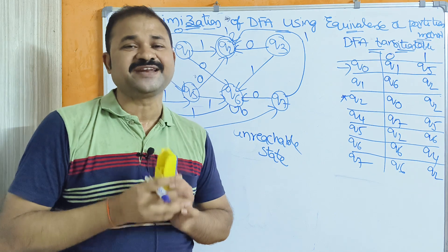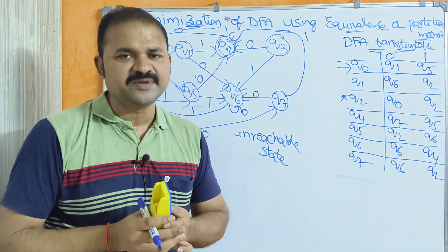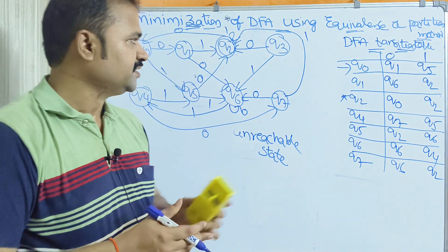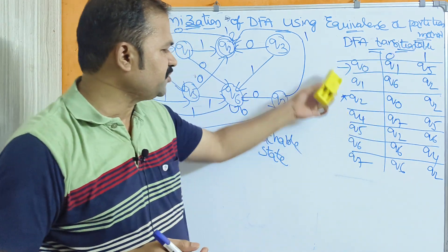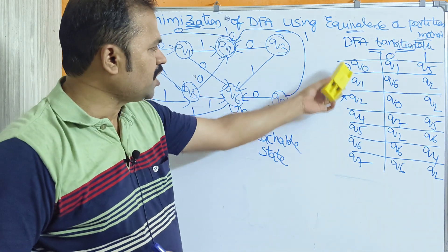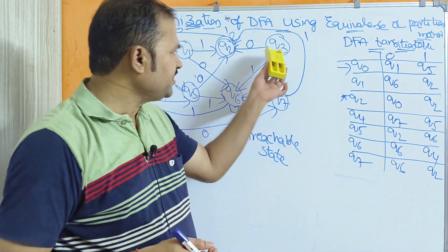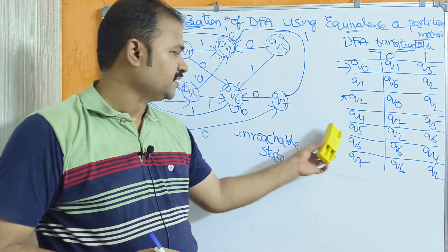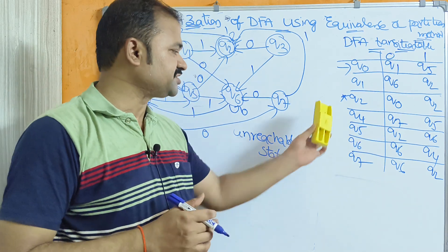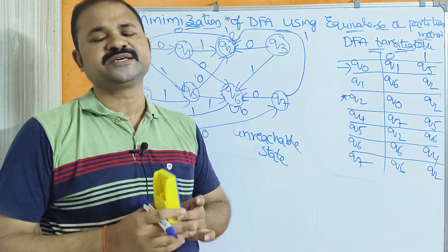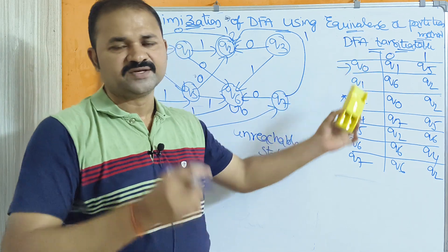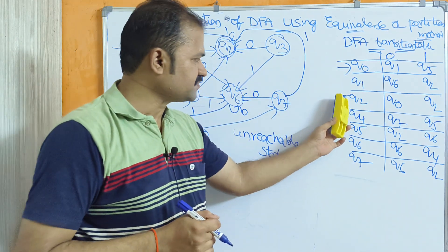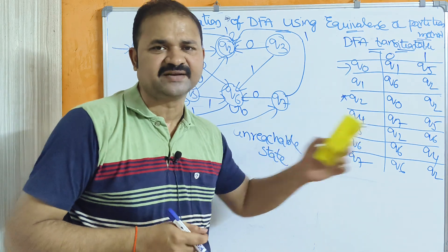Now let us see the DFA transition table. In the examination a transition diagram or transition table may be given. We have states Q0, Q1, Q2 — we are removing Q3 from the DFA so there is no need to write Q3. The remaining states are Q4, Q5, Q6, Q7. Q0 is the initial state so put an arrow mark; Q2 is the final state so put a star mark. The input symbols are 0 and 1.